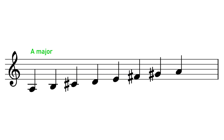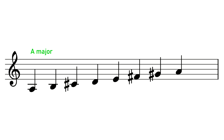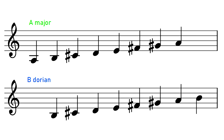Now, Dorian isn't just a scale, it's also a mode. It's the second mode of the major scale. This is the scale of A major. However, if I now treat the second note of the scale, the B, as the root note, I get a different scale — B Dorian. B Dorian is the second mode of A major. It uses all the exact same notes as A major, but instead of treating A as the root note, it treats B as the root, as the center of gravity. A major is the parent scale to B Dorian. They are related, but far from the same thing.